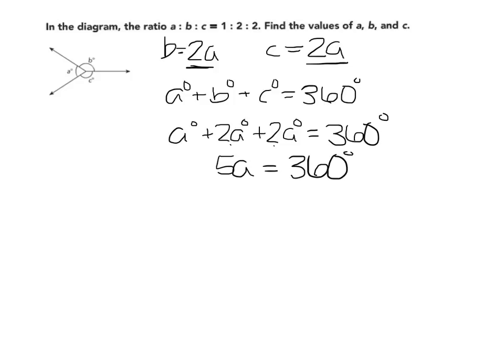To get A by itself, I am going to divide both sides by 5 because 5 divided by 5 gives me 1. So I have A equals 72.